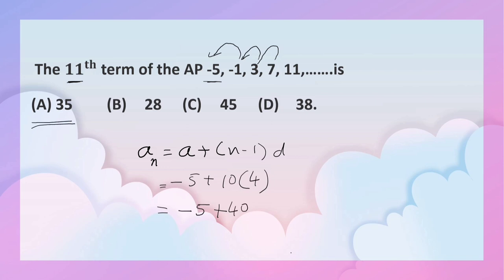So the correct option is A. Correct option is A, 35.